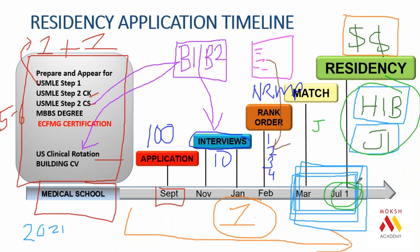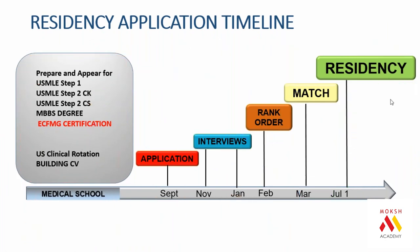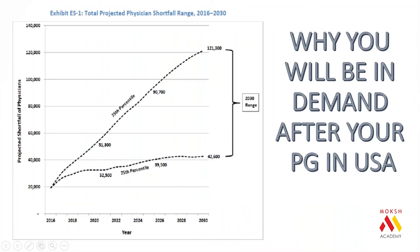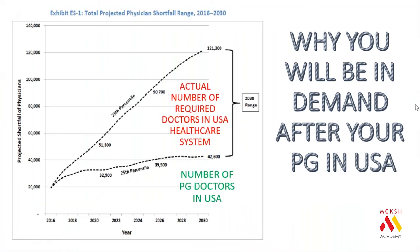What does that show? This shows the dependence of the American system on Indian students. There is a huge demand for Indian students.